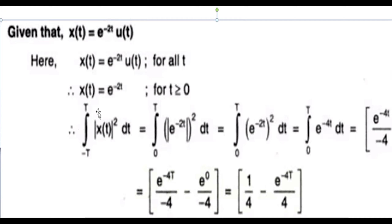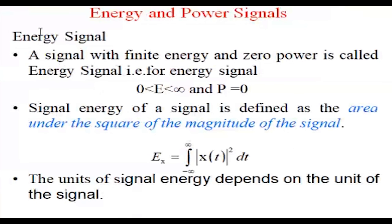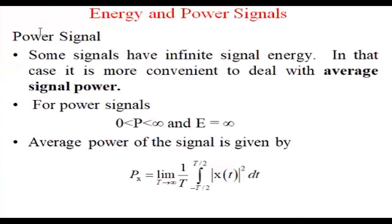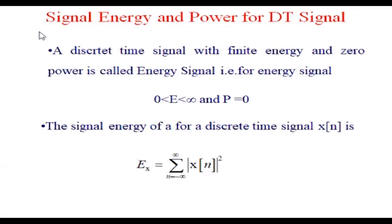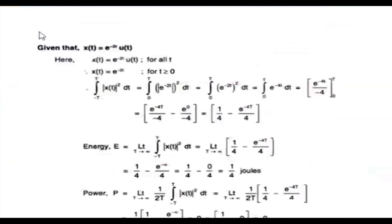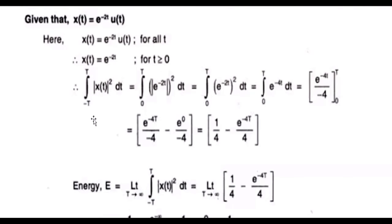So x(t) equals e to the power of minus t for t greater than zero — for t greater than zero, u(t) will be one, otherwise u(t) will be zero. What I'm trying to do here is evaluate the integral from minus T to T of |x(t)|^2. Now if we substitute x(t), we replace it with e to the power of minus 2t squared, and then the limits change from minus T to T to zero to T, because this particular quantity is only defined for t greater than zero.